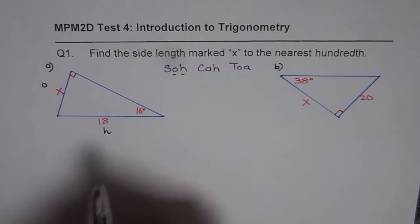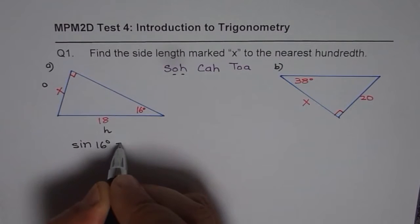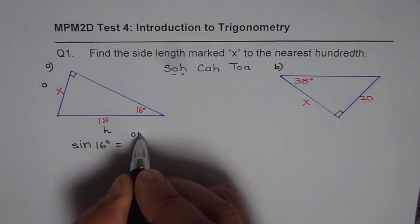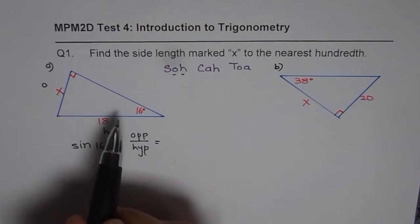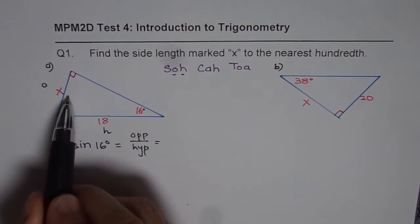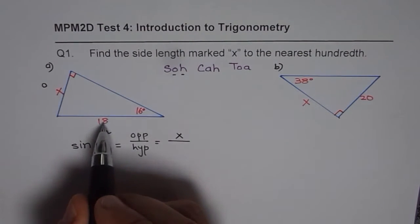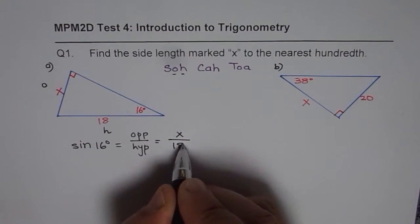So let us use sine. What is sine of 16? Sine of 16 degrees will be opposite over hypotenuse. So we will write opposite over hypotenuse, which from 16, if you see, the opposite side is X. X over hypotenuse is always opposite the 90 degrees, which is the longest side of a triangle.